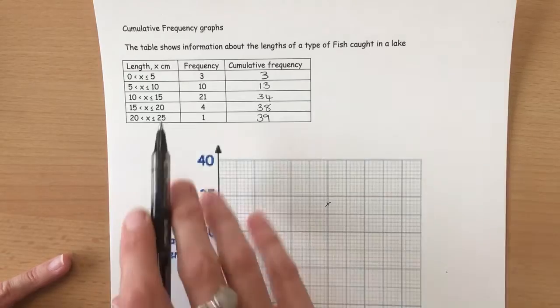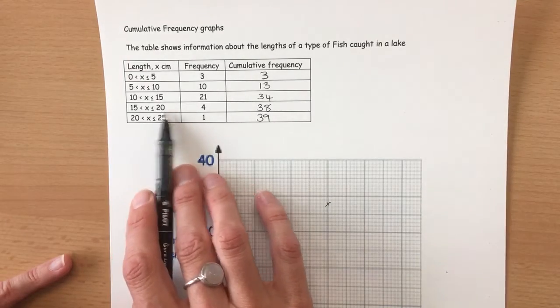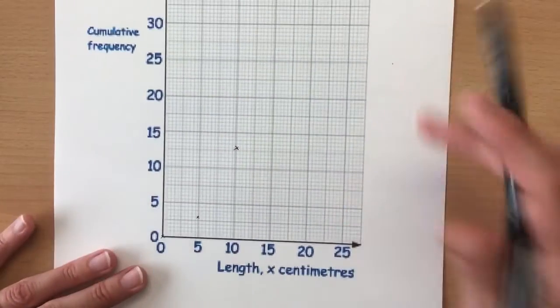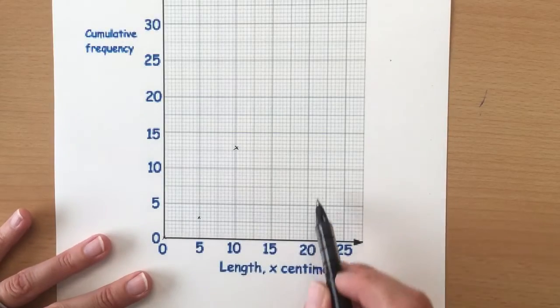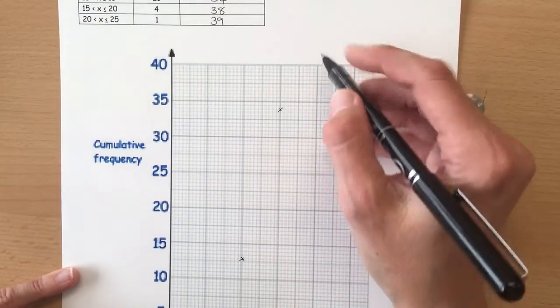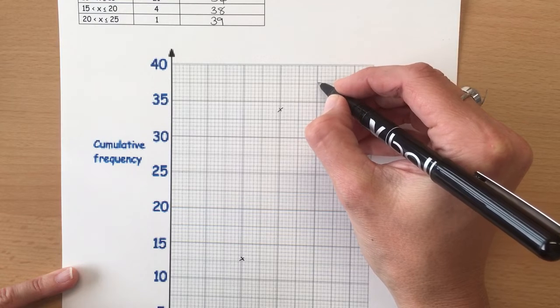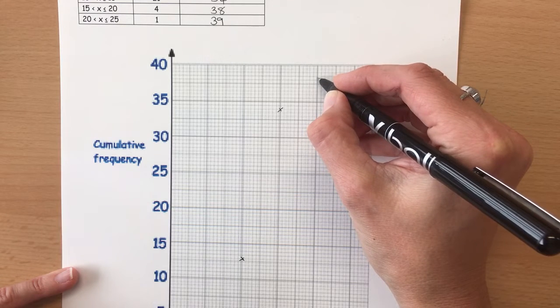Then we go back to the table and between 15 and 20 it's at 38. So between 15 and 20 we need to go up to 38.